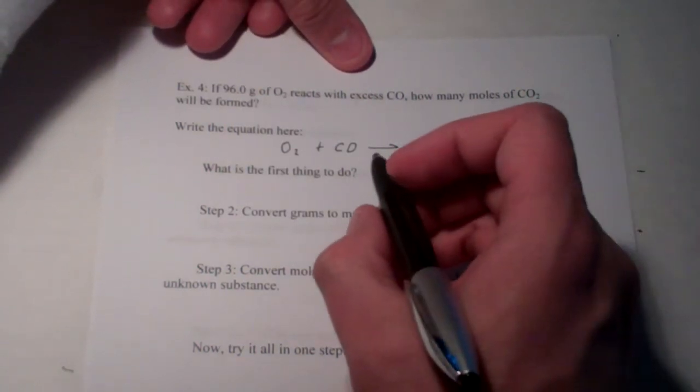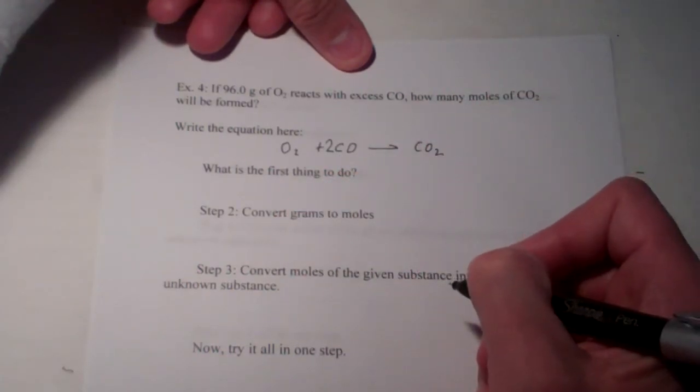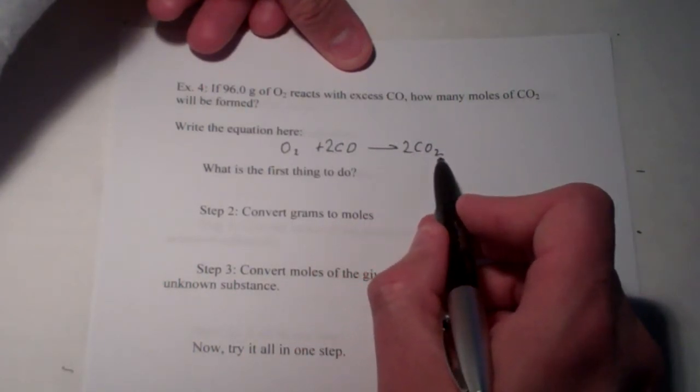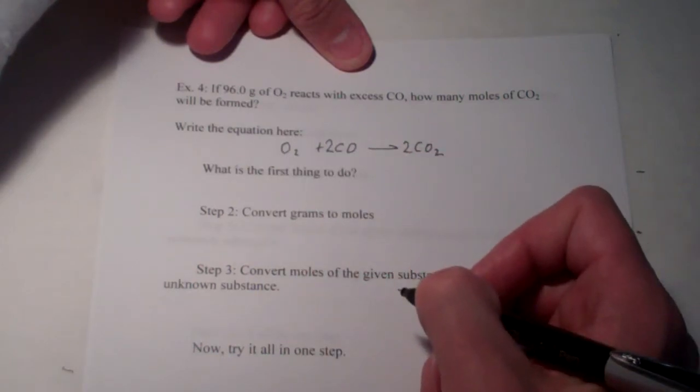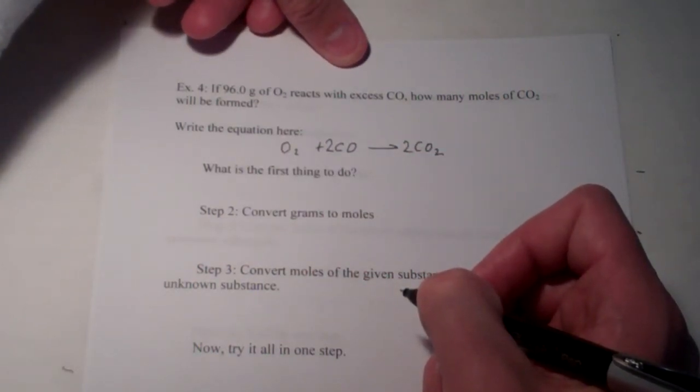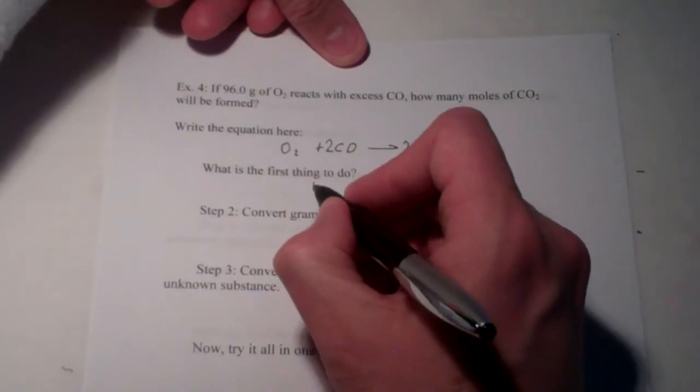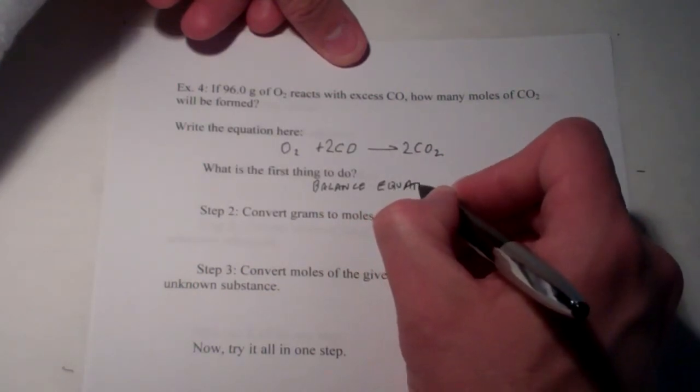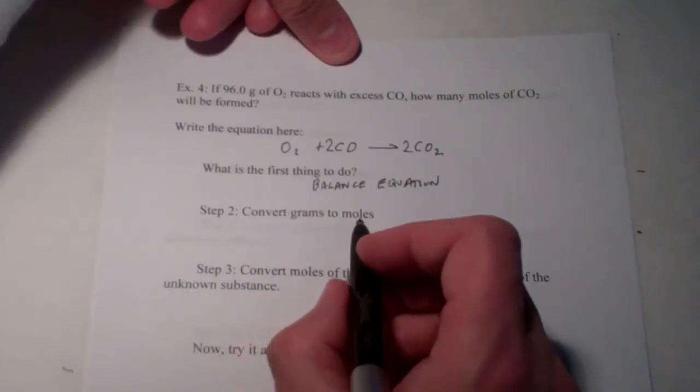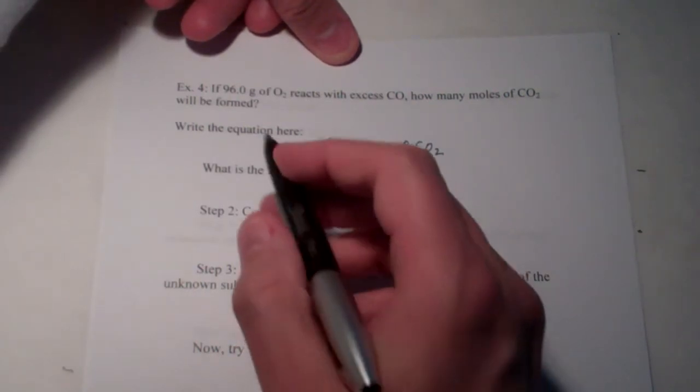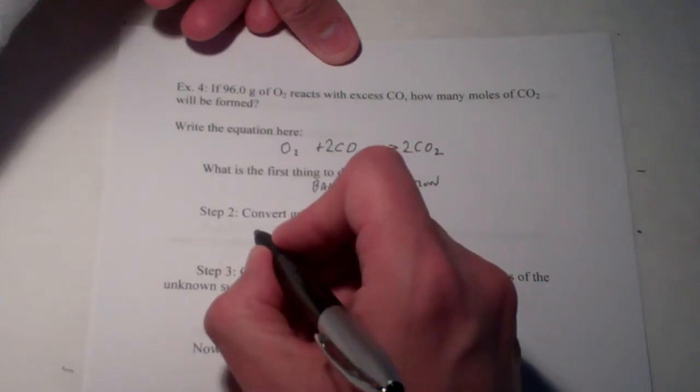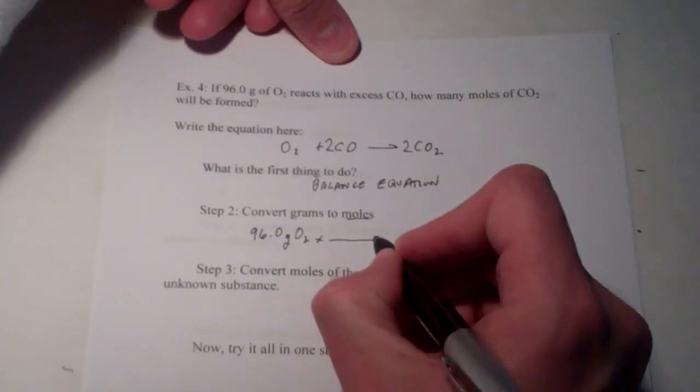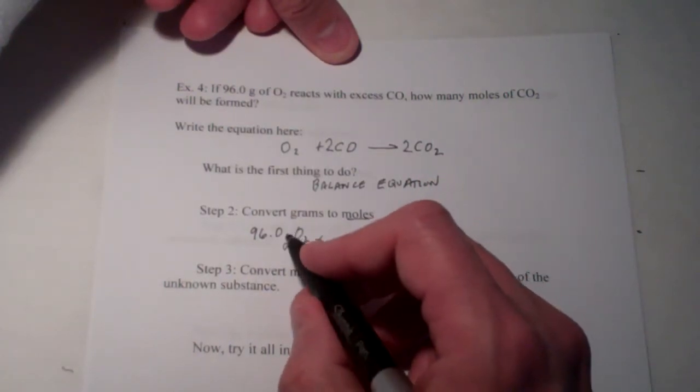To balance this, let's put a 2 in front of CO, and a 2 in front of CO2. It gives me 2 carbons on both sides, and 4 oxygens on both sides. Do you remember the first thing we need to do? We've done it. We balance the equation. The second thing, we have to get into moles of known substance. We're going to have to go from grams to moles of oxygen. So, 96.0 grams of oxygen. Put the unit we want to get out of on the bottom again. Grams of oxygen.